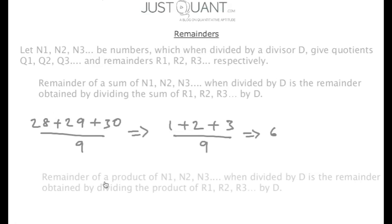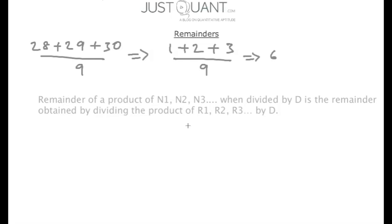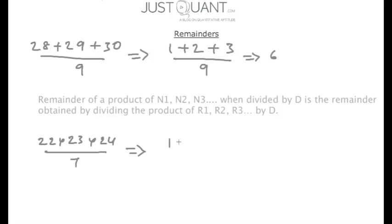Similarly, the remainder of a product of n1, n2, n3 when divided by d is the remainder obtained by dividing the product of r1, r2, r3 by d. For example, to calculate the remainder of 22 times 23 times 24 divided by 7, we first calculate the individual remainders: 22 divided by 7 gives 1, 23 gives 2, and 24 gives 3. The product 1 times 2 times 3 equals 6, divided by 7 gives us remainder 6.